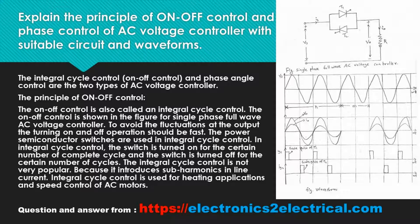The principle of on-off control. The on-off control is also called integral cycle control. The on-off control is shown in the figure for single phase full wave AC voltage controller. To avoid the fluctuations at the output, the turning on and off operation should be fast. Power semiconductor switches are used in integral cycle control.